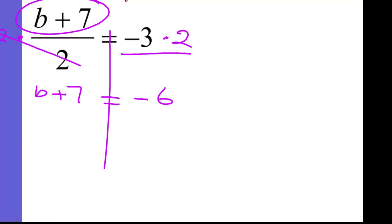Last step is to get b by itself. So you got to get rid of this 7. So minus 7 on both sides. b equals negative 13.